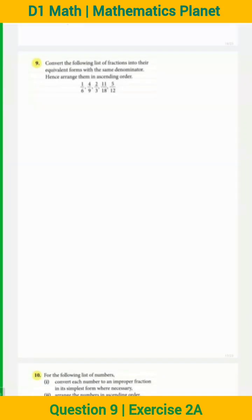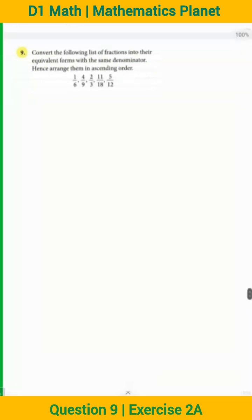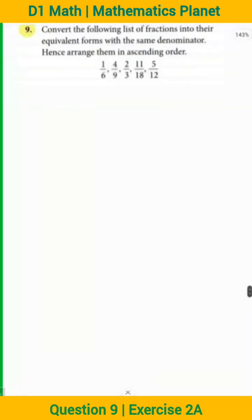Okay, so let's start. Convert the following list of fractions into their equivalent forms with the same denominator. So they are saying to make the denominator same. In class, what is the method to make the denominator same?